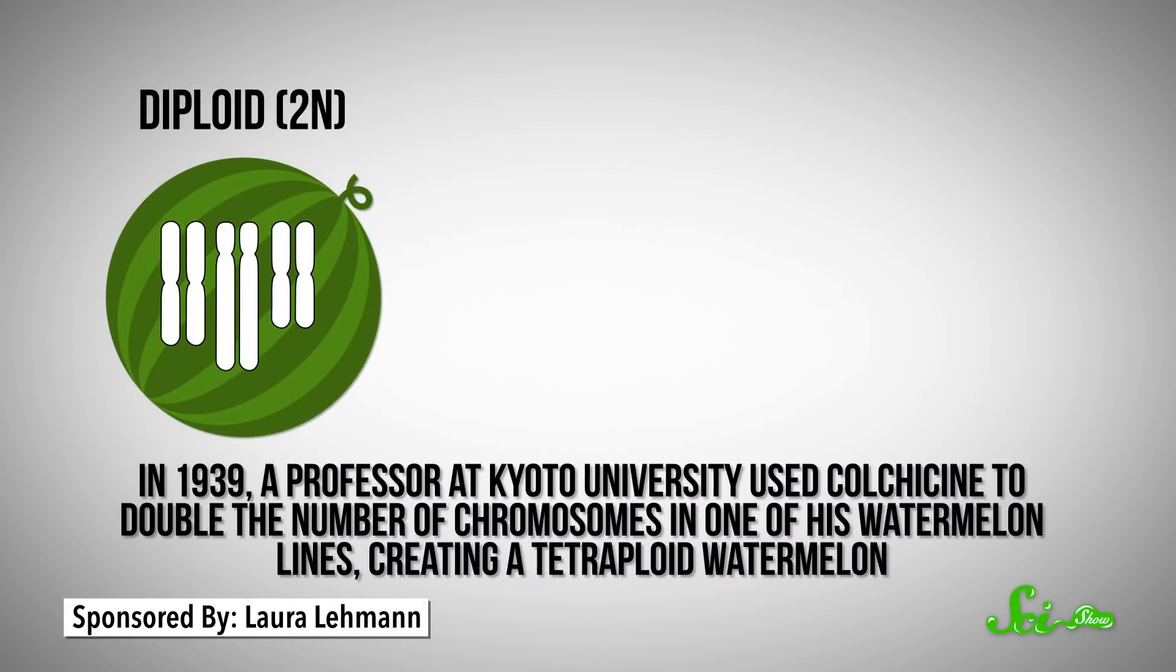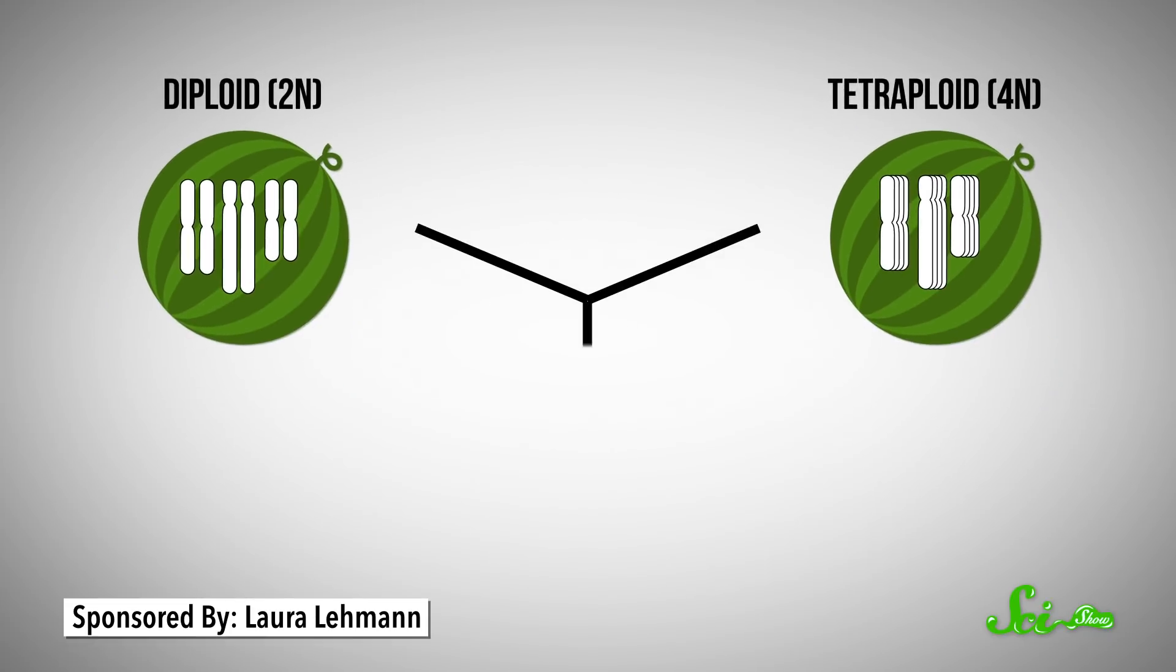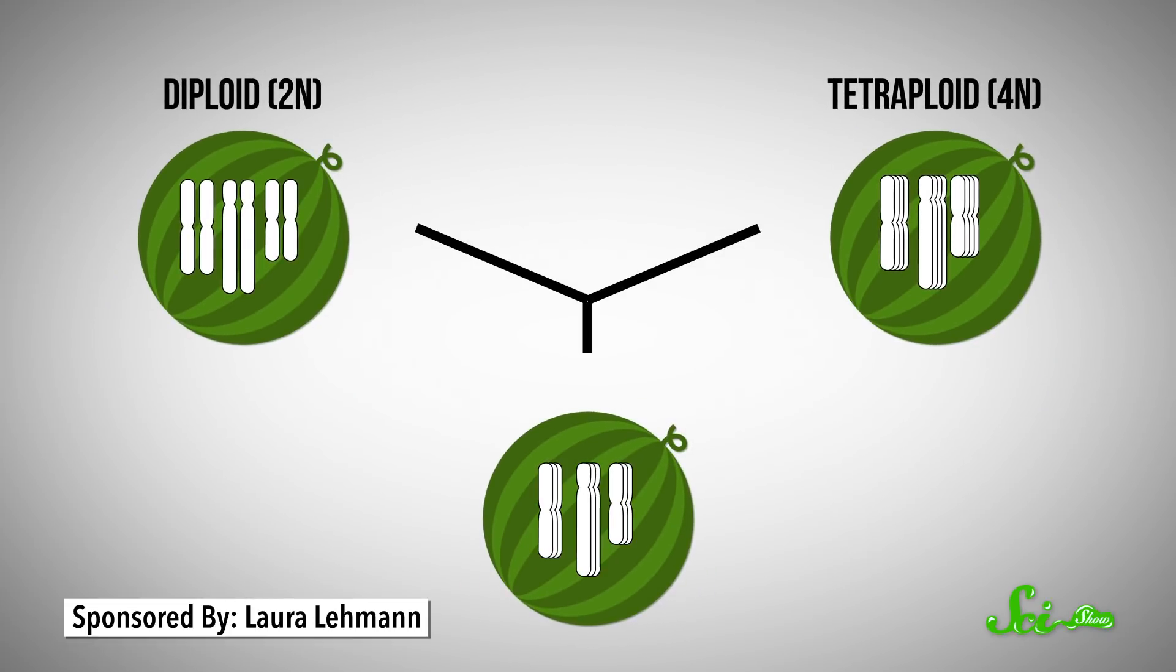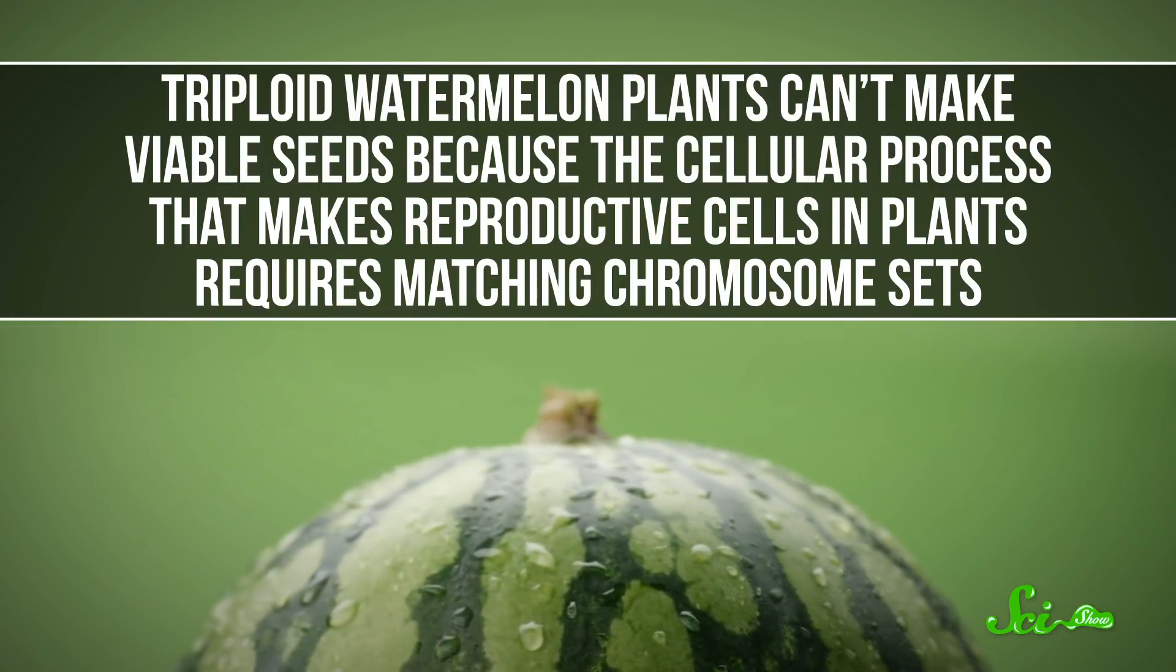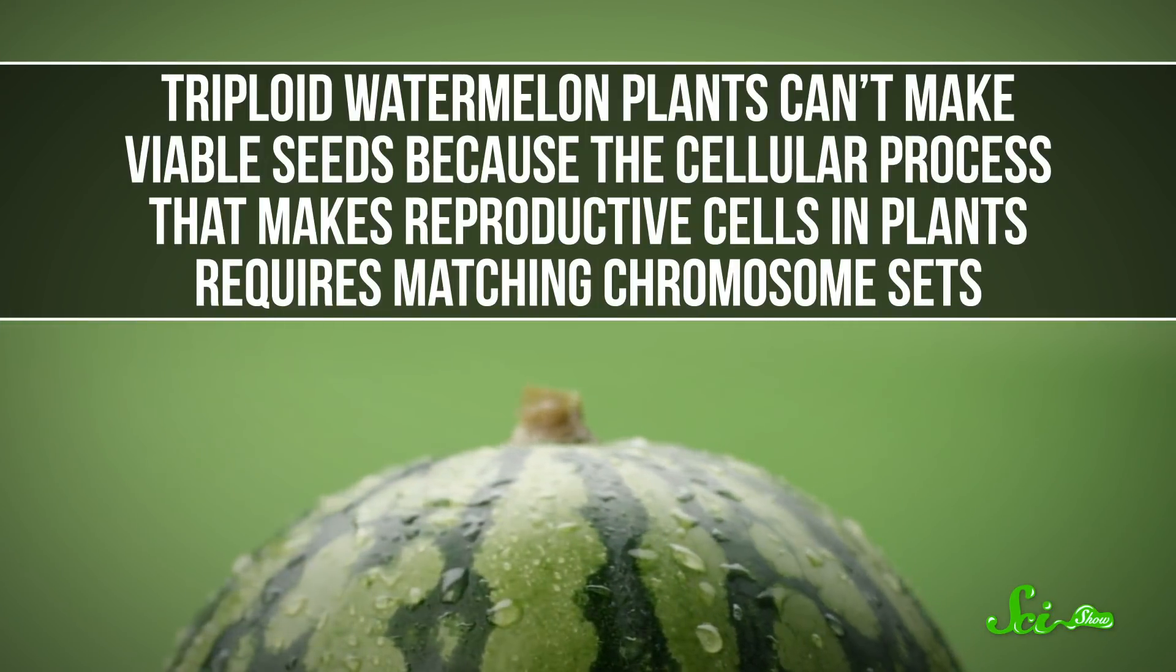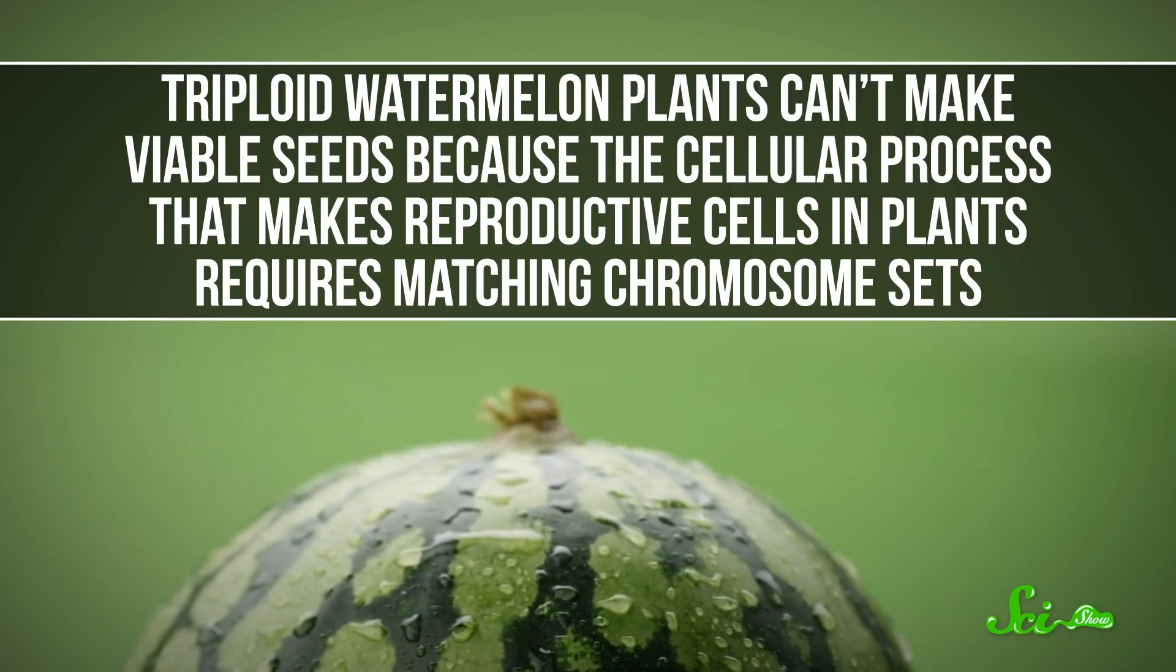But in 1939, a professor at Kyoto University used colchicine to double the number of chromosomes in one of his watermelon lines, creating a tetraploid watermelon. Then, when he bred the two plants together, the offspring were triploid. Triploid watermelon plants can't make viable seeds because the cellular process that makes reproductive cells in plants requires matching chromosome sets.